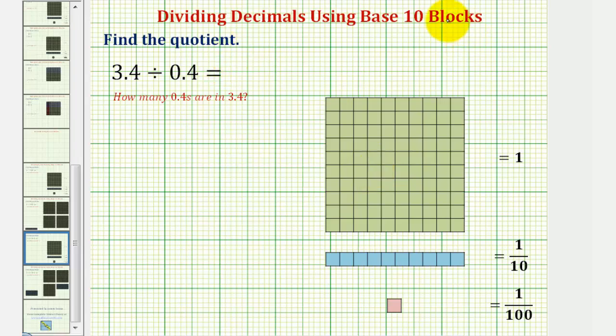We want to find the quotient using base ten blocks. We have 3.4 divided by 0.4, which means we want to determine how many 0.4 there are in 3.4. Because we're working with decimals, we'll define the base ten blocks as you see here on the right.